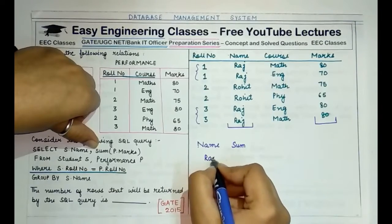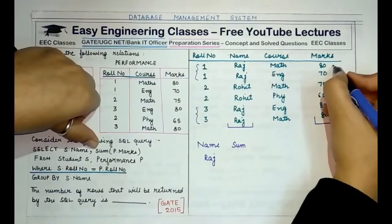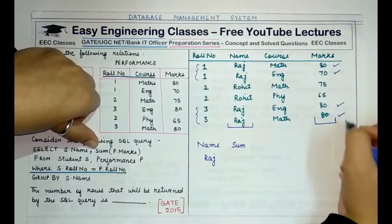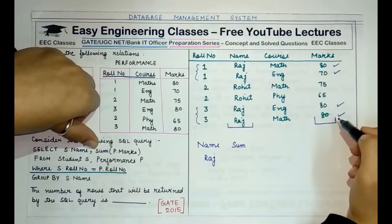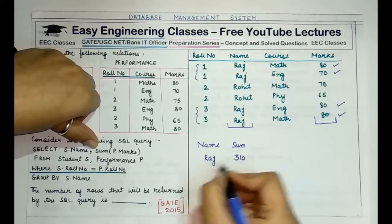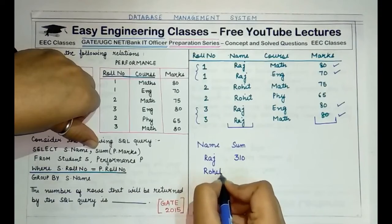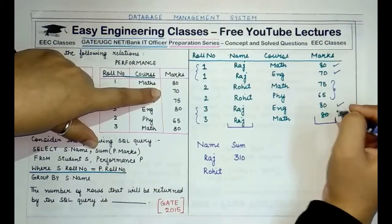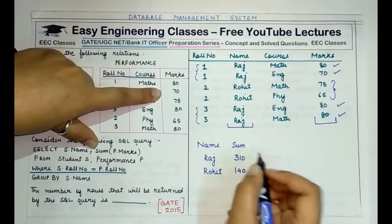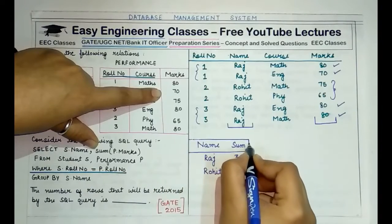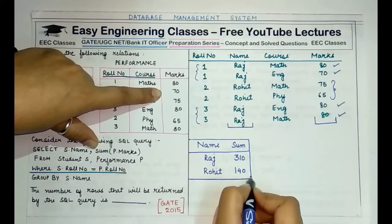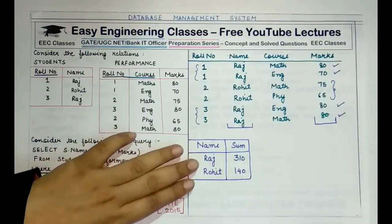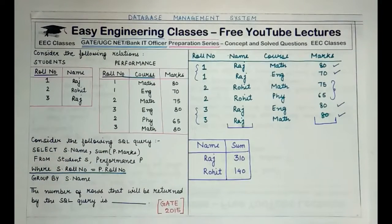For Raj, the sum of marks is 80 + 70 + 80 + 80 = 310. For Rohit, the sum of his two marks (75 + 65) is 140. So the result is a table with two columns and two rows: name Raj with sum 310, and name Rohit with sum 140.